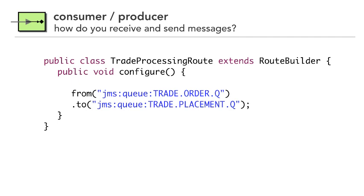This may seem rather silly, but take a look at how profound this statement of code is. System A is sending that basket to a queue called trade order queue, but it doesn't know what protocol or which queue the placement service is actually using. That whole integration between System A, where we order a trade and then place that actual trade, are totally decoupled. That's the significance here.